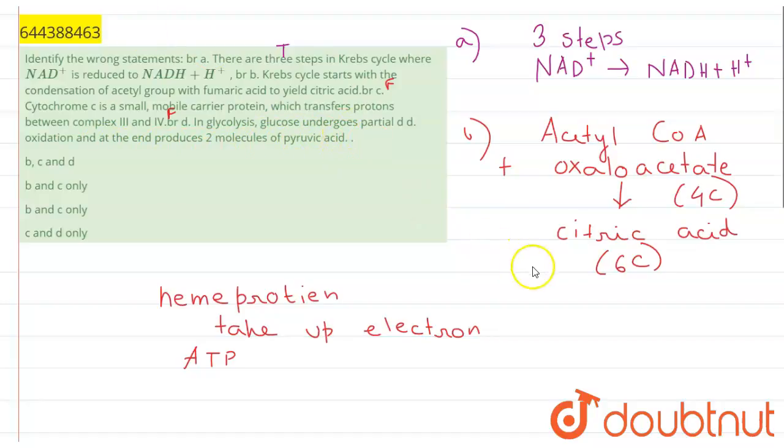Glycolysis is the first step of cellular respiration, and here one glucose molecule gives rise to two pyruvic acid molecules. This is partial oxidation of glucose because at the end of complete oxidation, which includes the Krebs cycle and oxidative phosphorylation, 38 ATP are generated, while at the end of glycolysis only 4 ATP are generated. So this is a true statement.